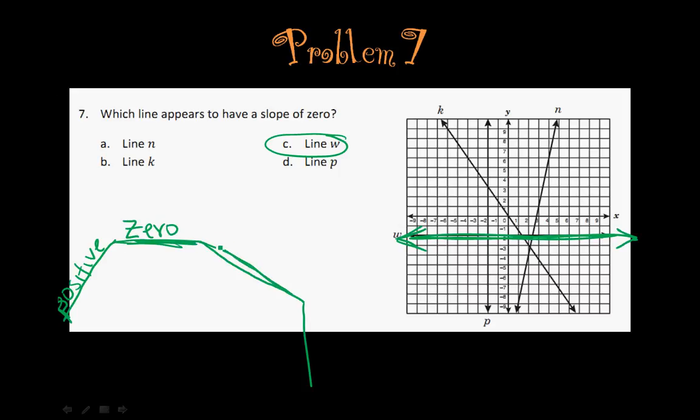If it goes downhill, it's a negative slope. And whenever it goes straight down, straight up and down, it's called undefined.